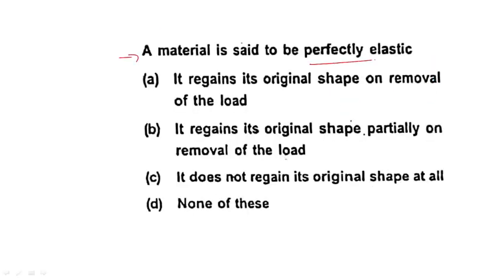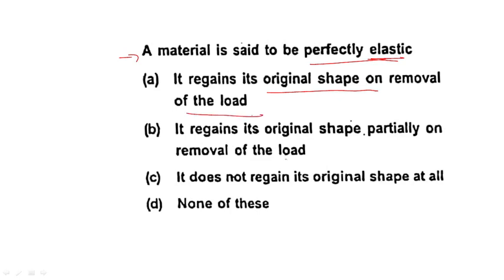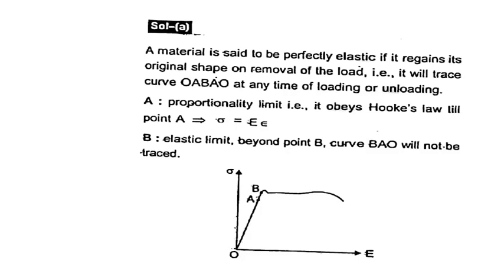Next question: A material is said to be perfectly elastic when it regains its original shape and size on removal of the load. The load-deformation curve traces O-A-B going up and B-A-O coming back. Point A is the proportionality limit obeying Hooke's Law, and point B is the elastic limit. The curve from B back to A and O will be retraced.